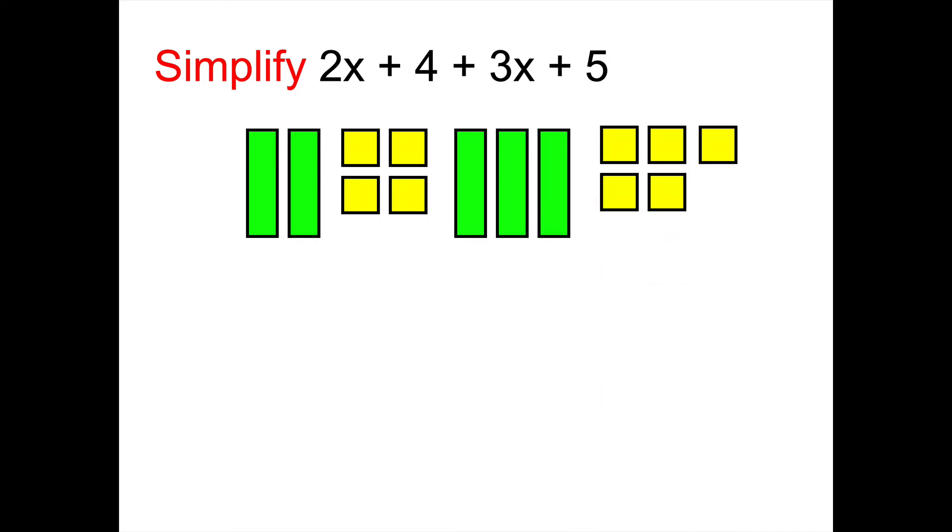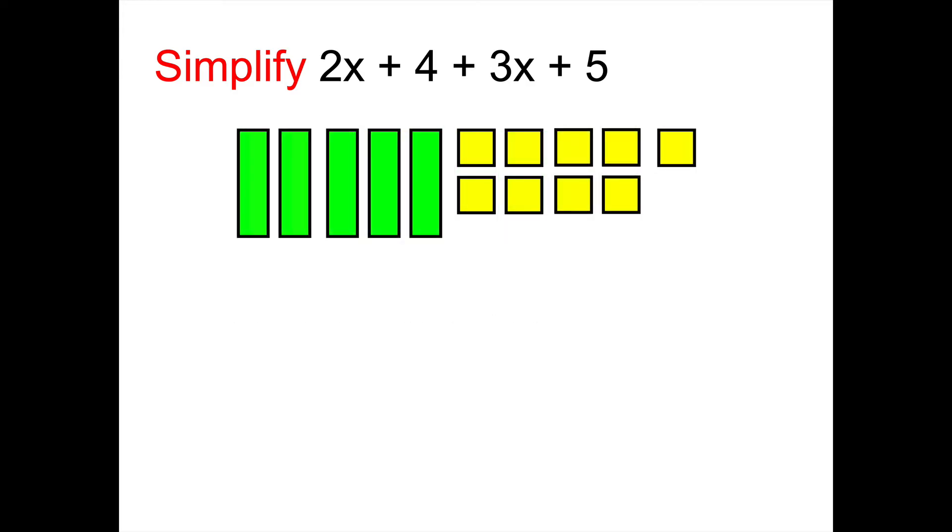Now to simplify this, it's as easy as grouping the tiles together that belong together. So let's regroup them like so, and then we can read what do we have? How many x tiles? Well, all together I see 5x. And how many ones? I see 9. And so the answer would be 5x plus 9.